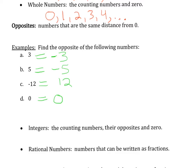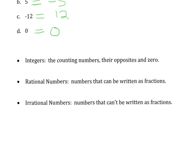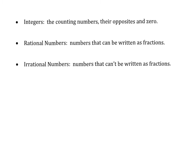With these whole numbers and their opposites along with 0, we get our next number set, which is called our integers. Our integers are those numbers on the number line: starting from the left, negative 3, negative 2, negative 1, 0, 1, 2, 3, and continuing in both directions. These are what we call our integers, and this is what we wanted to get to in this section.